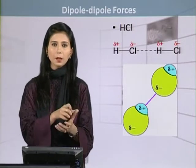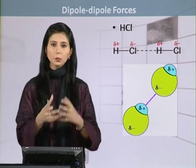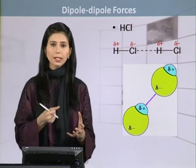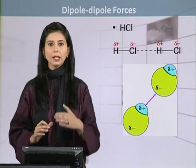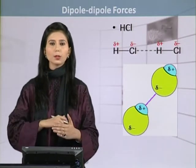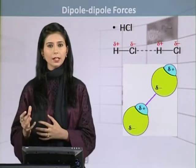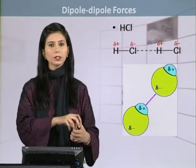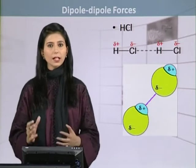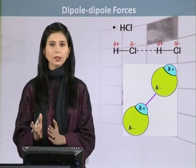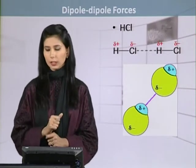Here, chlorine, being more electronegative, will attract the shared pair of electrons toward its side. This electronegativity difference is enough for dipole-dipole forces to originate. But it is not so great that chlorine completely takes the electron away from hydrogen. Rather, it creates a partial positive and partial negative charge due to the slight difference in electronegativity.